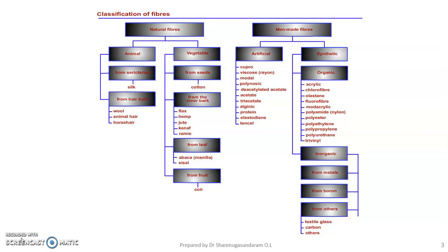Synthetic fibers are produced purely by synthetic means — only chemicals are used for their manufacturing. Examples of synthetic fibers are polyester, nylon, polypropylene, and polyurethane. These are all examples of 100% synthetic fibers.